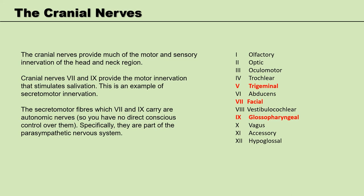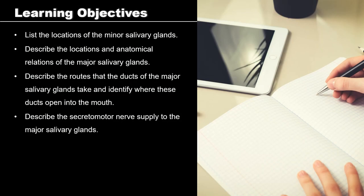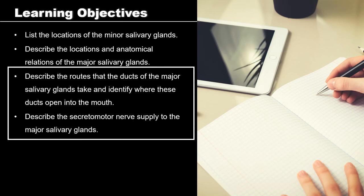Let's look at the learning objectives for today's video. By the end of this video, and after any further necessary self-study, you should be able to describe the locations and anatomical relations of the salivary glands, describe the routes that the ducts of the major salivary glands take and identify where these ducts open into the mouth, give an account of the secretomotor nerve supply to the major salivary glands, and outline the minor salivary glands.